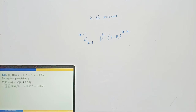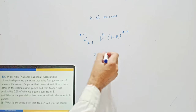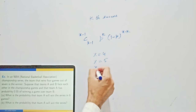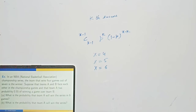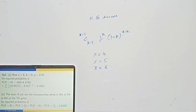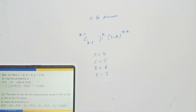For the second part — what is the probability that team A will win the series overall? It is possible that team A wins the first 4 games, or wins the series in the 5th game, 6th game, or 7th game. So you have to calculate the probabilities for x = 4, 5, 6, and 7 and add them all together to get the final answer.